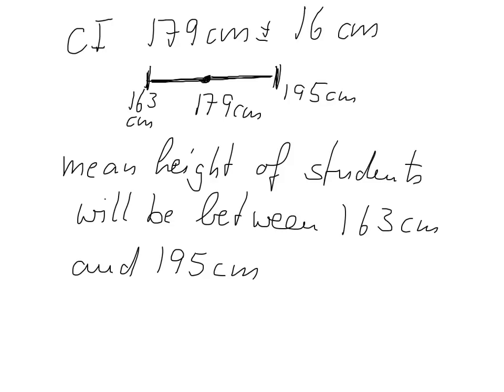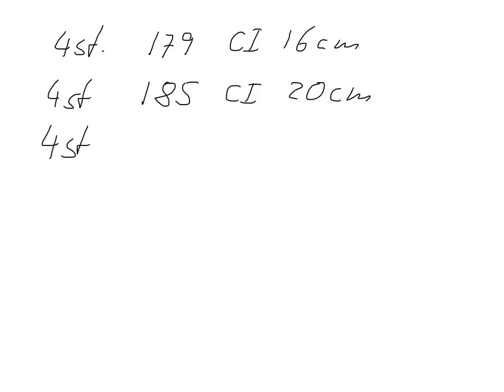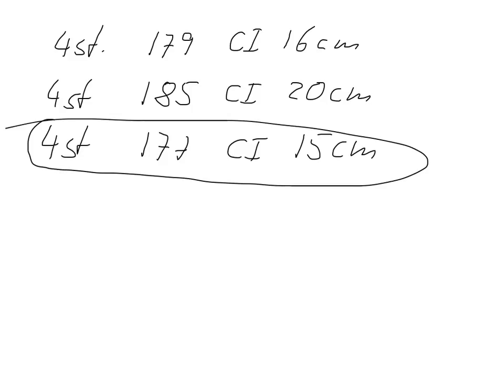If we did this experiment several times, so for example, I would do another set of 4, so I have my first sample, I take 4 students, and I get 179, and a confidence interval of 16 cm. I then do another 4 students, I get 185, confidence interval of 20 cm. Do another one, 4 students, 177, confidence interval of 15 cm. And for each of these samples, I can calculate my average and the confidence interval.